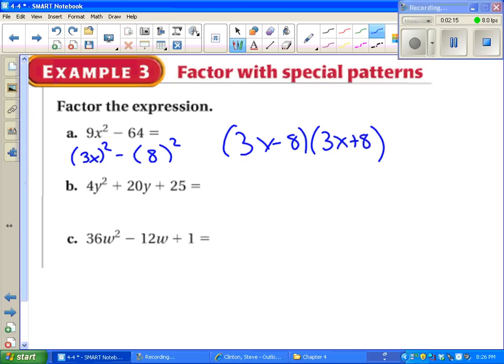Same idea on b and c. We've got something squared at the beginning. We've got something squared at the end. We just have to make sure that the middle matches up. And it does. And because b is positive, we say 2y plus 5 squared.